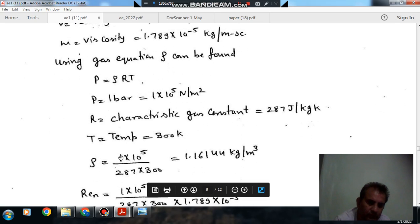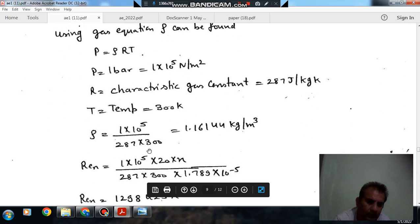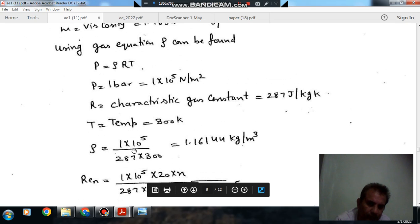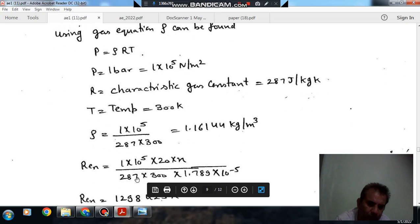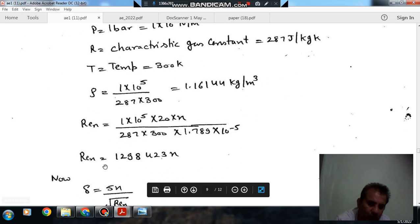From this, we have rho is 1.1614 kg per meter cube. The Reynolds number is rho Vx by mu, which is 1.1614 times 20 times x divided by 1.789 times 10^-5. So Rex equals 1,298,423x.